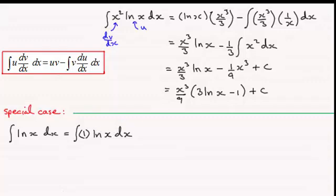So when we get this, we put the natural log of x equal to u, and the 1 is dv by dx. You might want to pause the video at this stage and give this a try. I'll just give you a moment to do that. Okay, welcome back then if you had a go.